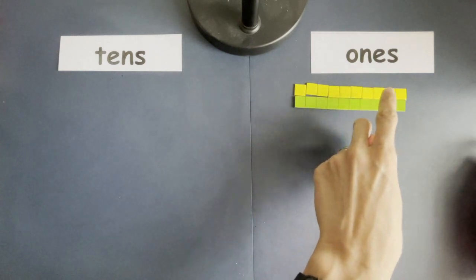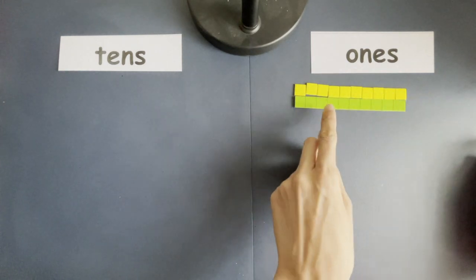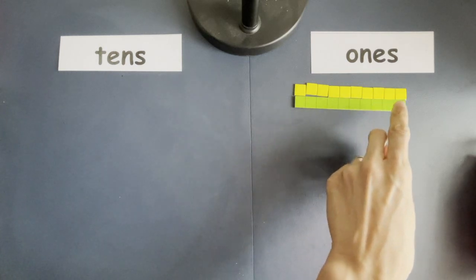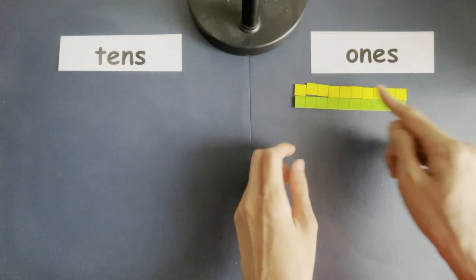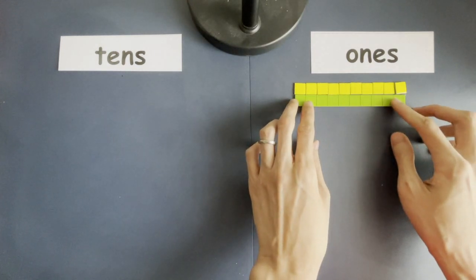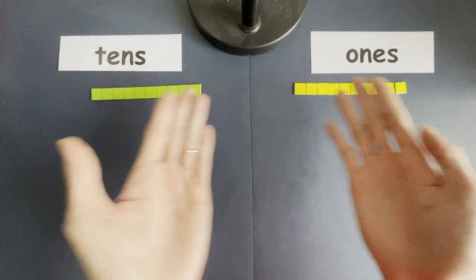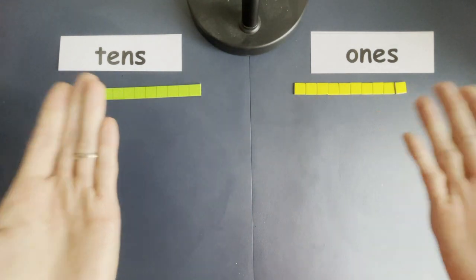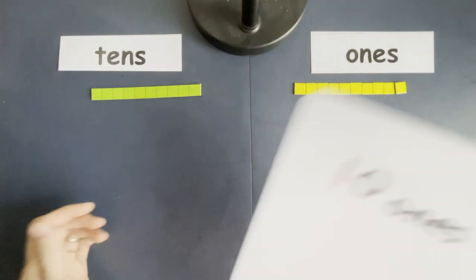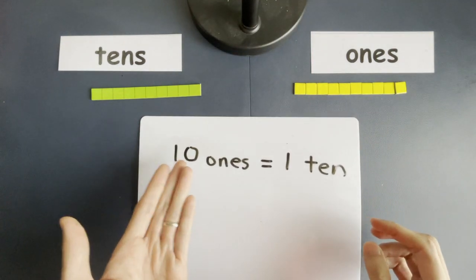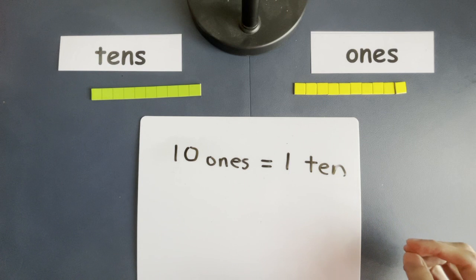One, two, three, four, five, six, seven, eight, nine, ten. One, two, three, four, five, six, seven, eight, nine, ten. So, ten ones is the same as one ten. They are both equal. They are both the same number. So, we say that ten ones is equal to one ten.